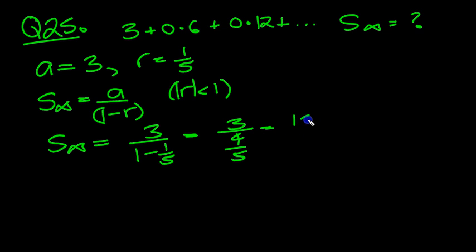5 swings up to the top to be with the 3 to make 15 over 4. And if you want to write that as a decimal, it's 3.75, isn't it? A quarter under 4.